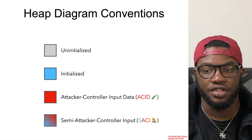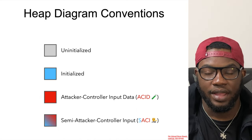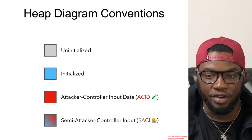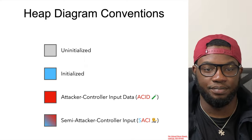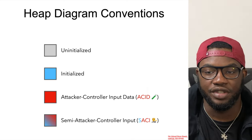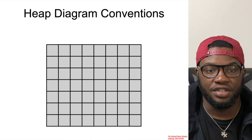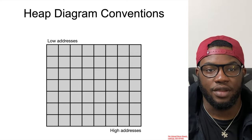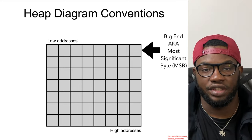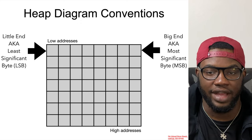Now we'll go over some of our conventions, most of which are similar to the stack buffer overflow section you should have completed by now. Gray for uninitialized, blue for initialized, red for attacker-controlled input data, a red-blue mixture for semi-attacker-controlled input data, and additionally yellow to denote data caused by the attacker to be allocated. Higher addresses will be at the bottom and lower addresses at the top.